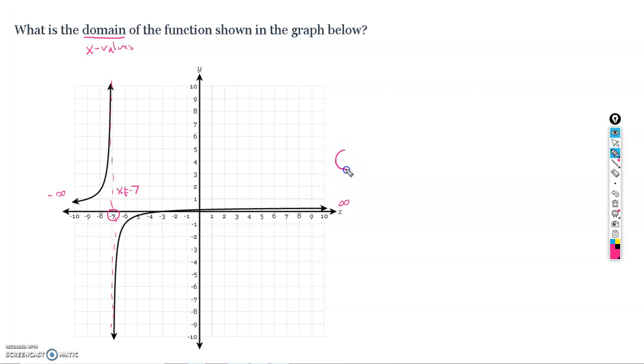the furthest left it goes is negative infinity, and then it goes up to negative 7, where it kind of hits a little bit of a pothole or asymptote. And then it picks up again, or we're going to union with skip over negative 7. So a curved bracket, union a curved bracket with the same number in here, that basically means skip over that number.